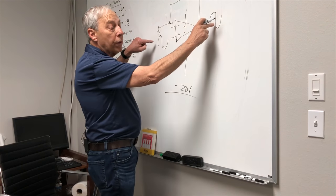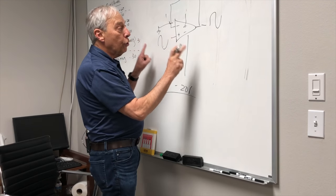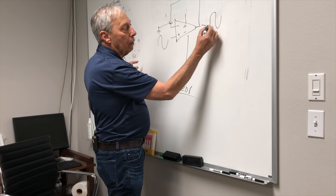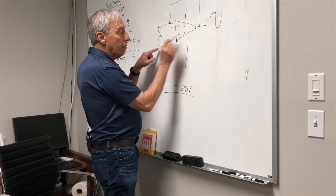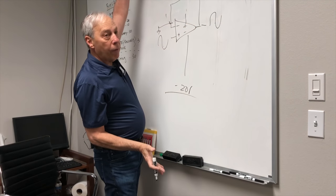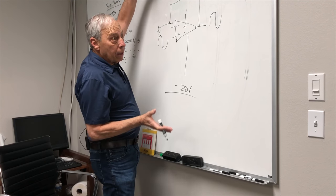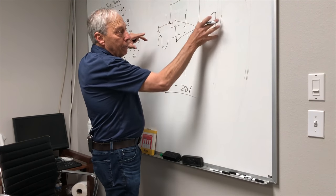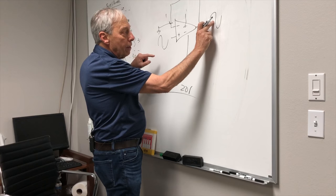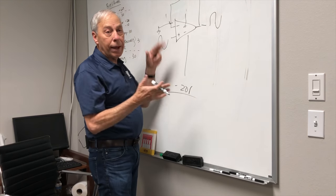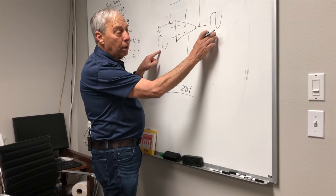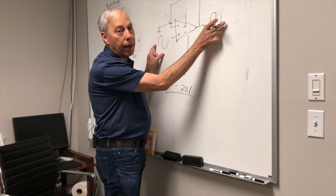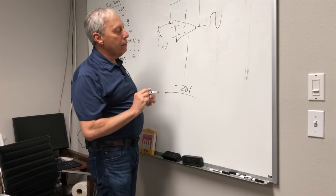Two things have happened. One, we've controlled the gain. Two, because this is now very clean compared to this, we're using all that gain of the amplifier to get it right, to do whatever needs to be done in the amplifier to get this closer to this. That's called lowering the distortion. So now we have low distortion. We have controlled gain, and it's not out of control.